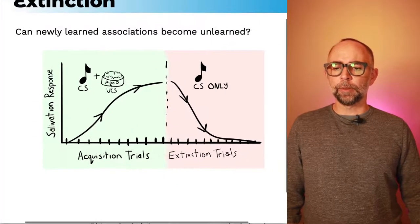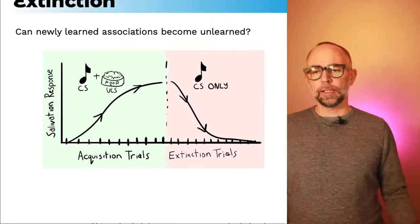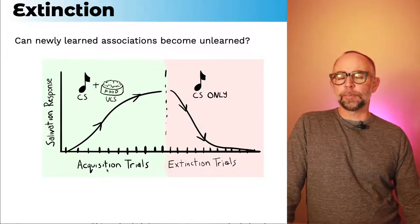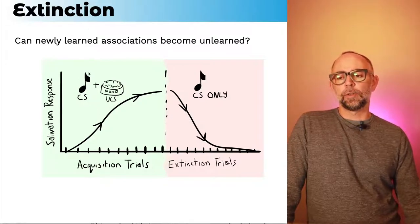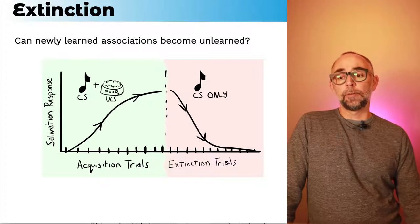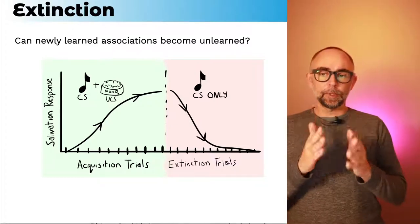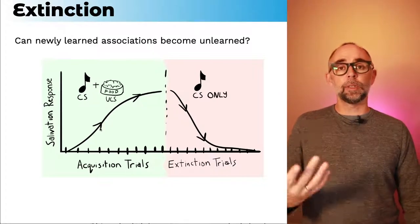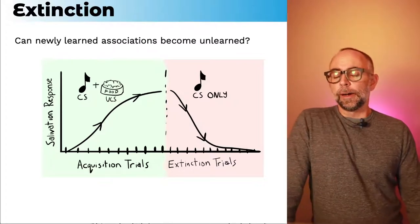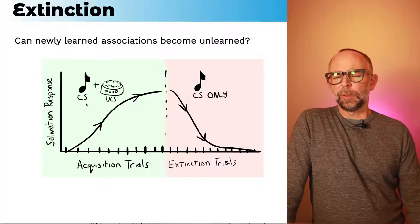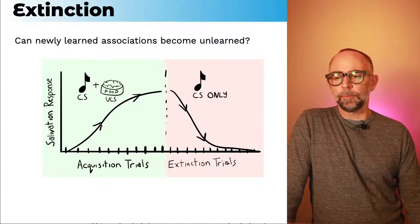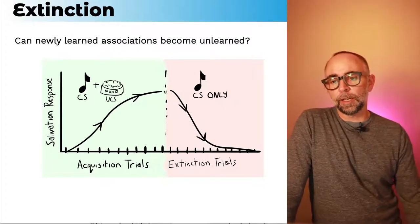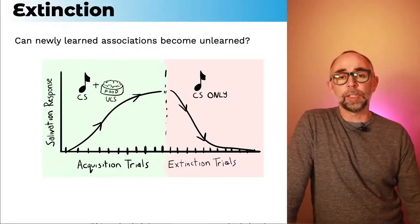So here's a picture of both an acquisition phase and an extinction phase. They're very similar. During the acquisition trials, you would pair a neutral stimulus and a food reward, let's say, together many times. And across the pairings, if you were to measure the salivation response alone, that is, when you only present the tone, you'll see that the tone will elicit the salivation response at a high level after this association has been acquired.